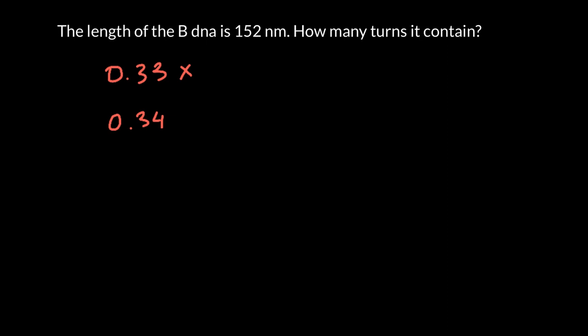Some would simplify and tell us that per one turn DNA has 10 base pairs. Some other sources may say 10.5 base pairs per single full turn. In this case, we're going to get, for example, 3.3 nanometers per full turn of the DNA.